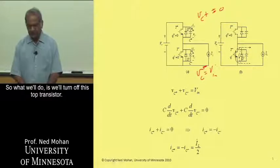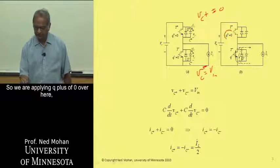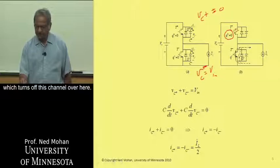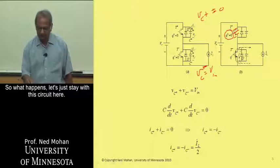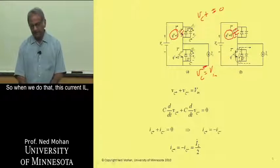All right, so what we'll do is we will turn off this top transistor. So we are applying Q plus of zero over here, which turns off this channel over here. So what happens is, let's just stay with this circuit here, we turn it off here.